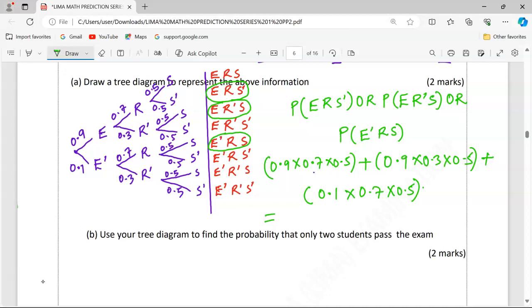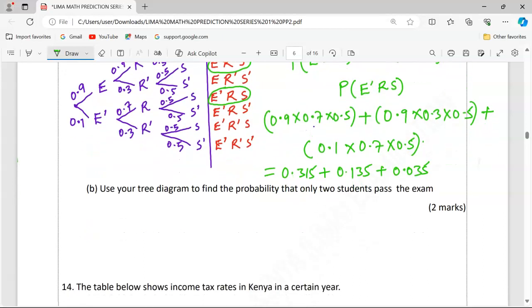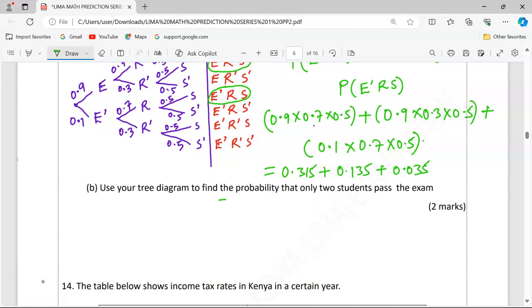Then, when we compute this, we are going to have 0.315, or 0.135, or 0.035. When we add this, we are going to get 0.485. This is the probability that only two students are going to pass.